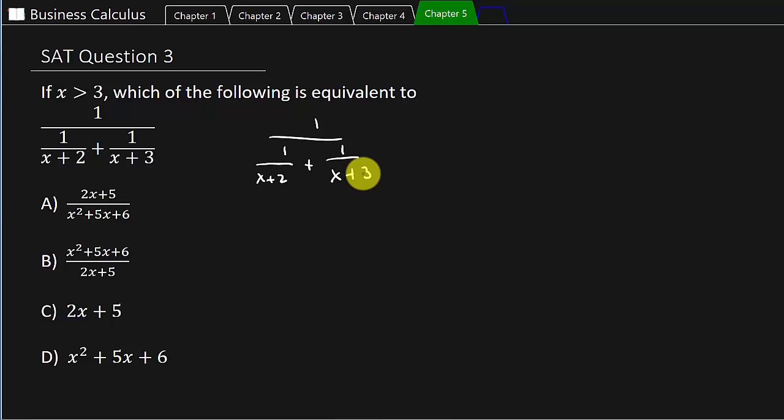Alright, so what we do here is we look at this as a complex fraction. So that's the one up there. We can look at this one as being 1 over 1. And so what we do is we look at the denominator 1 here, the x plus 2 and the x plus 3. And we get a common denominator which we can see is x plus 2 times x plus 3.